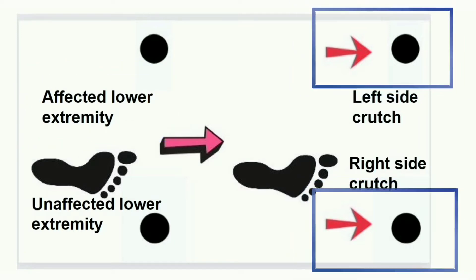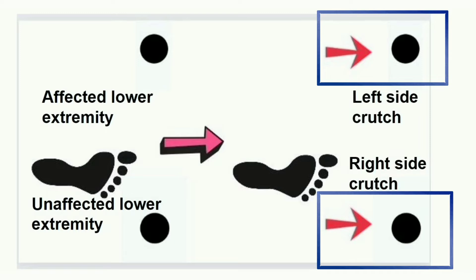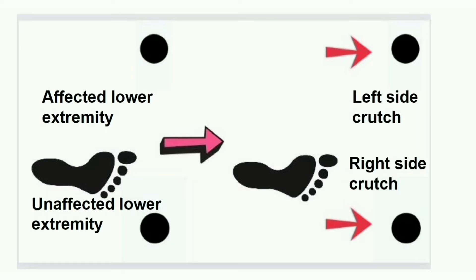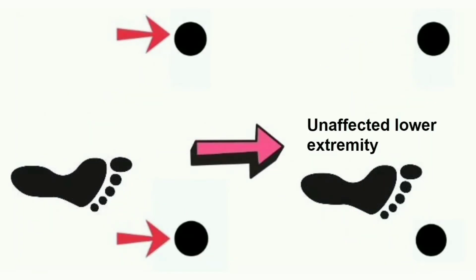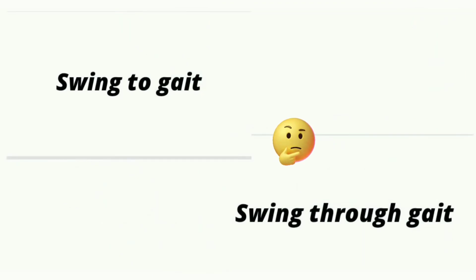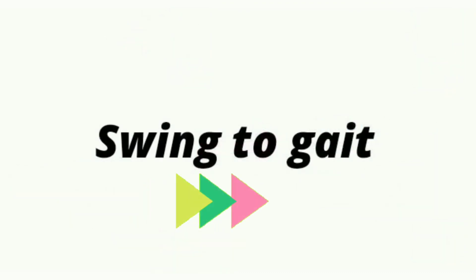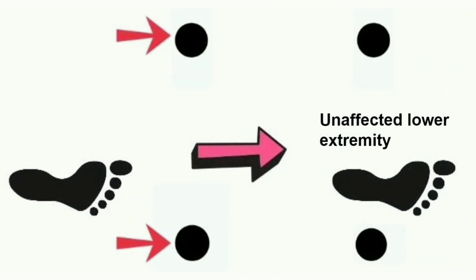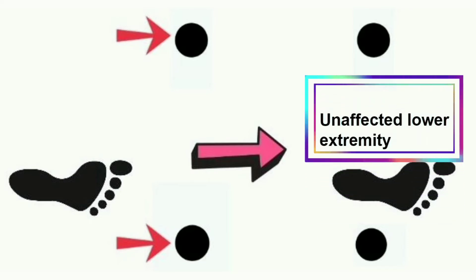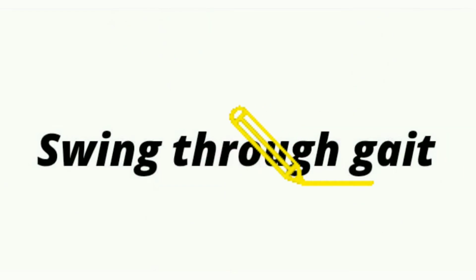In two point gait, both crutches simultaneously advance forward. After that, the unaffected lower limb is placed forward. There are two types of gait patterns: swing to gait and swing through gait. Both crutches advance simultaneously forward, then the unaffected lower extremity advances to the crutches for swing to gait, or beyond the crutches for swing through gait.